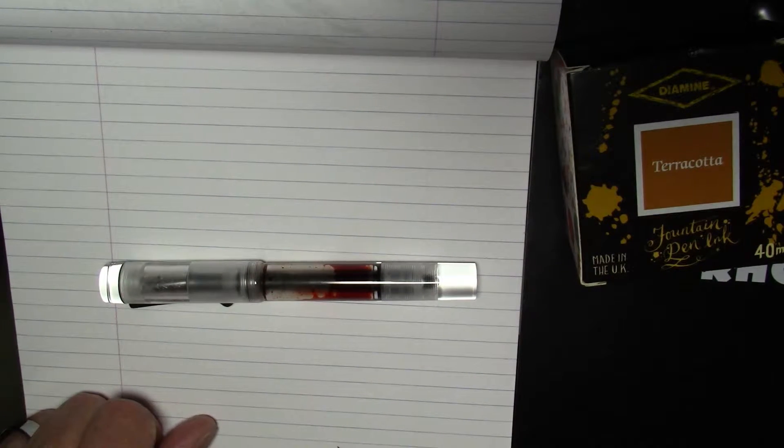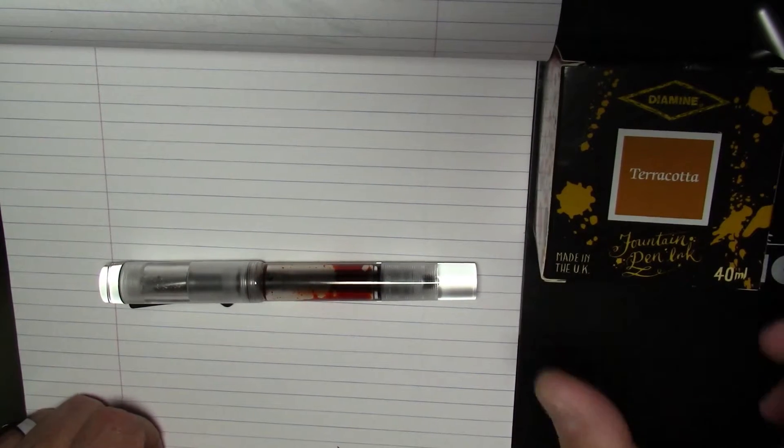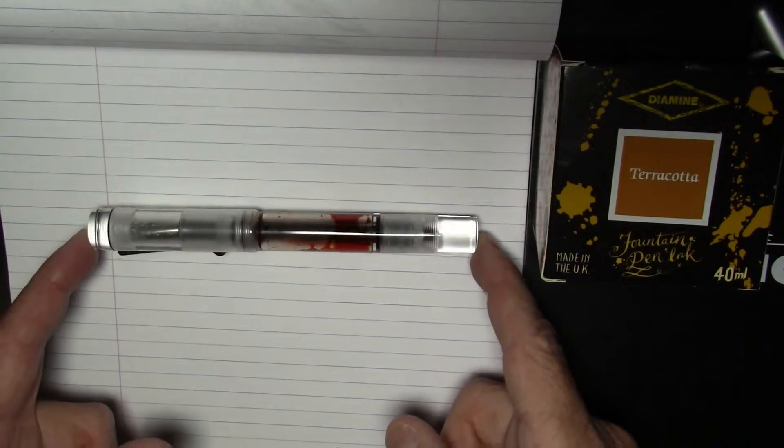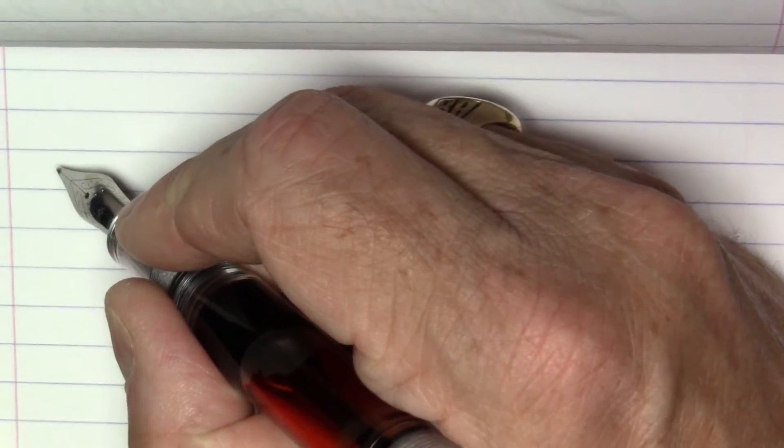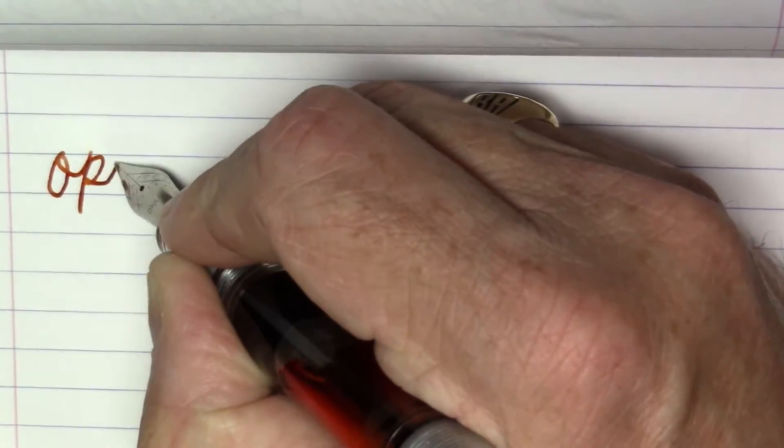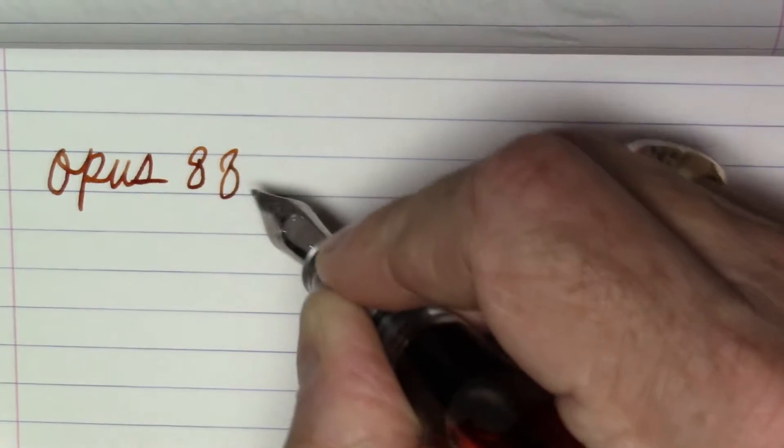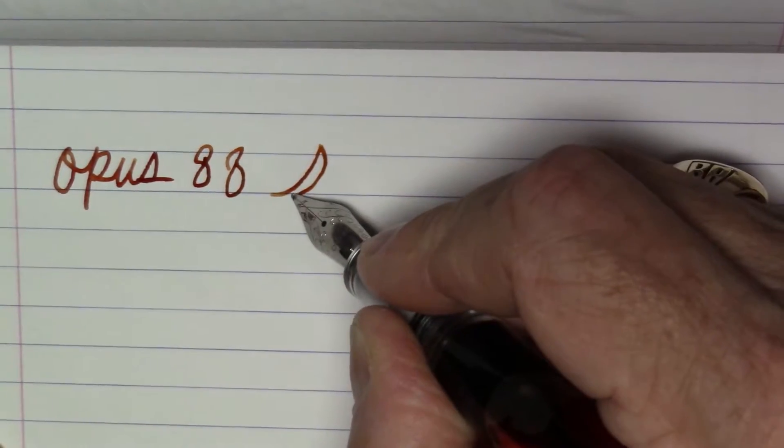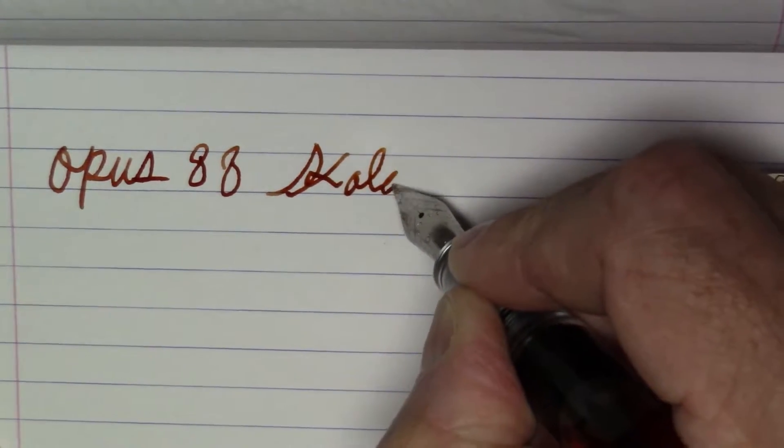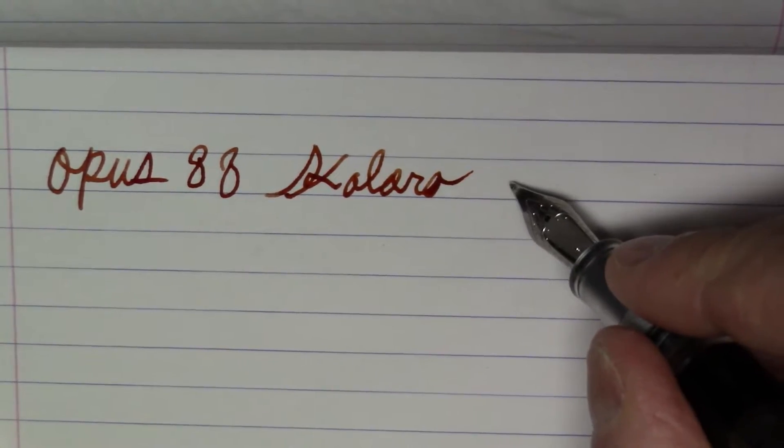So I guess one of the only things left to see on this pen is how it writes, so we're about to find that out right now. Okay, what we have here is an Opus 88 Coloro demonstrator.